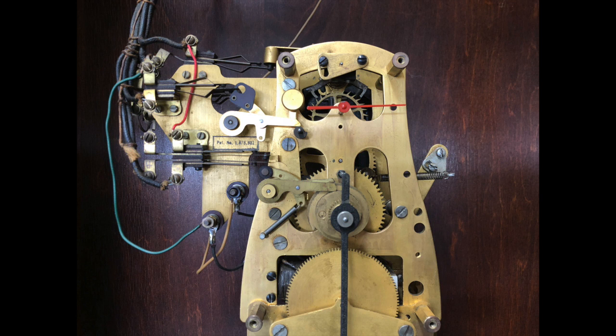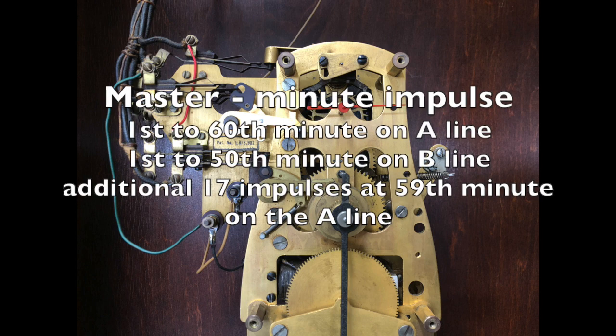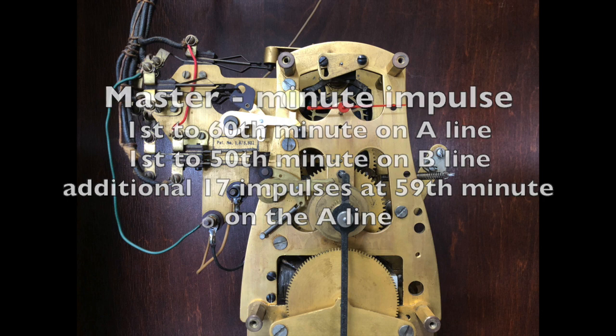The master movement correction contacts are wired to transmit a minute impulse on the A line from the first to the 60th minute and also a minute impulse on the B line from the first to the 50th minute and an additional 17 impulses on the 59th minute via the A line.